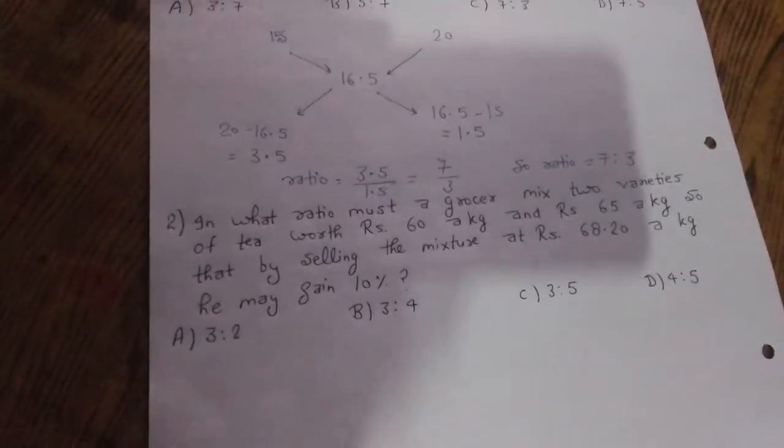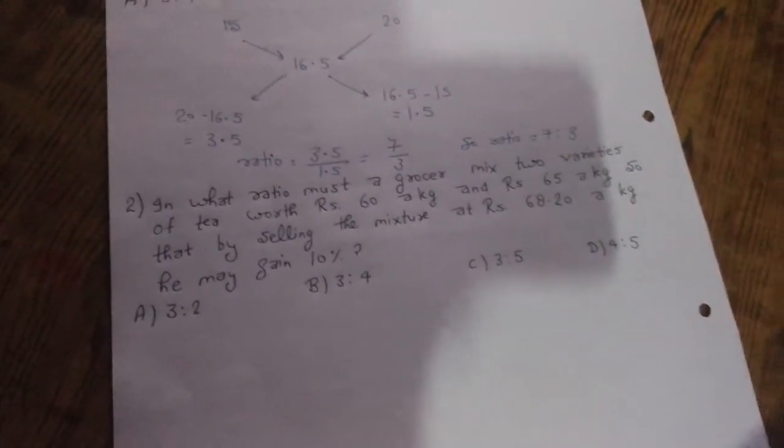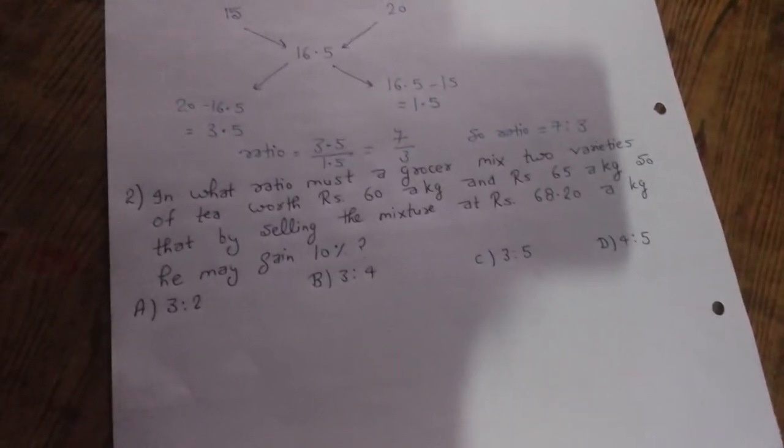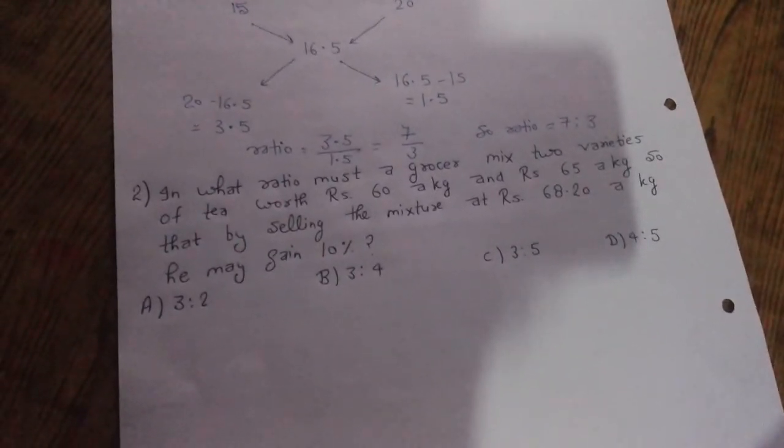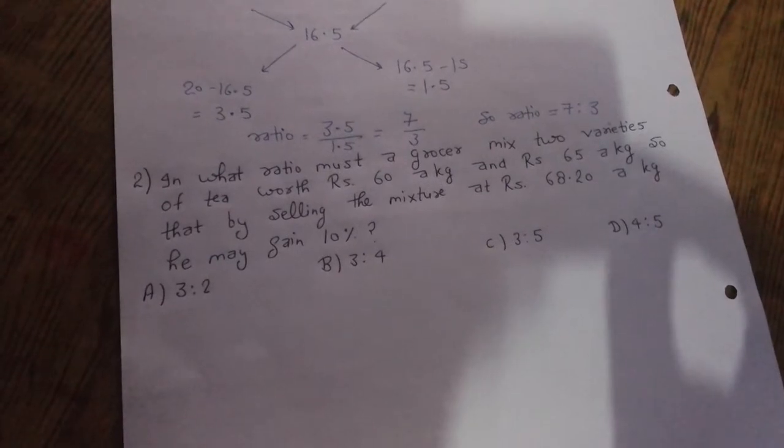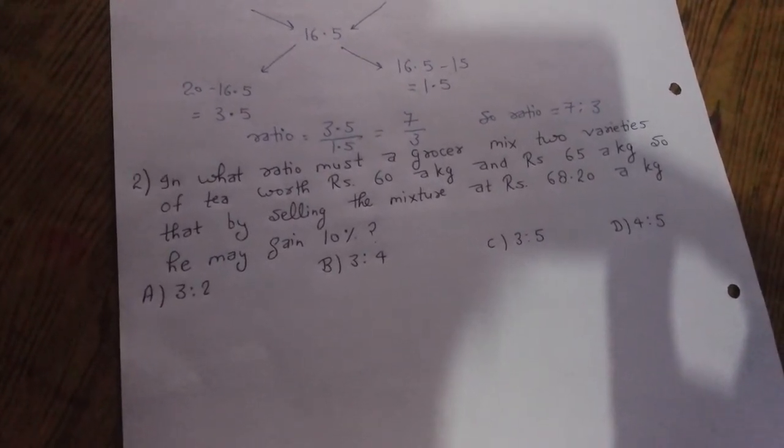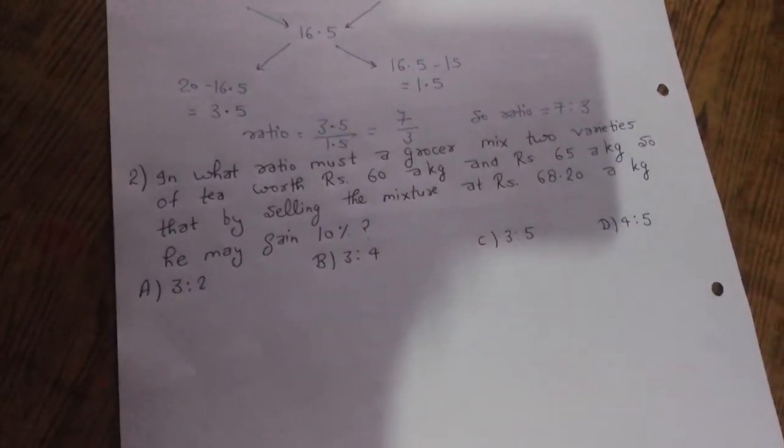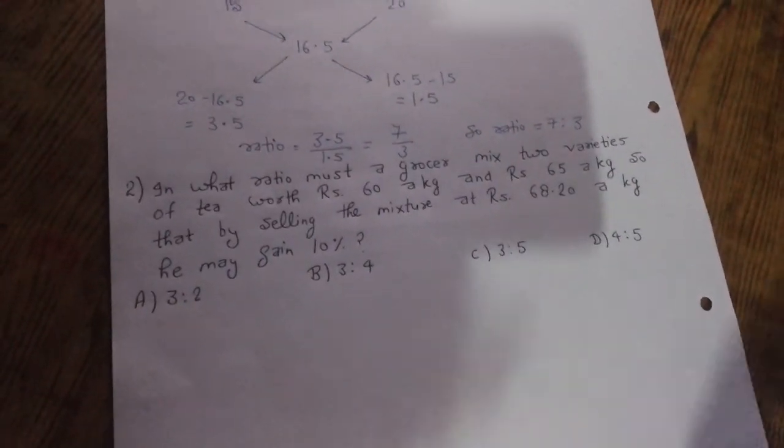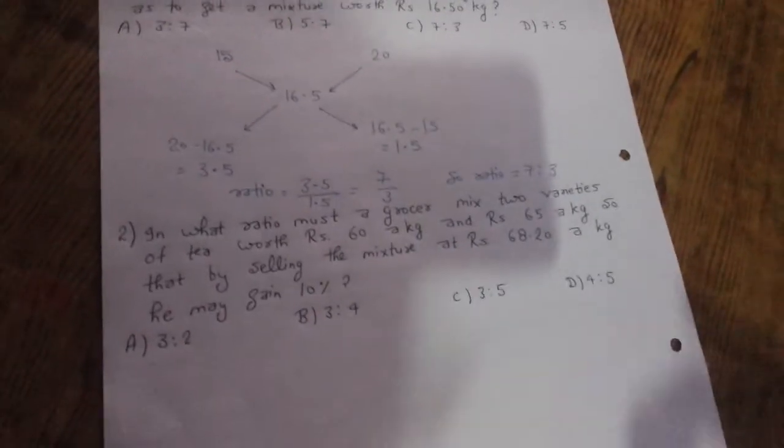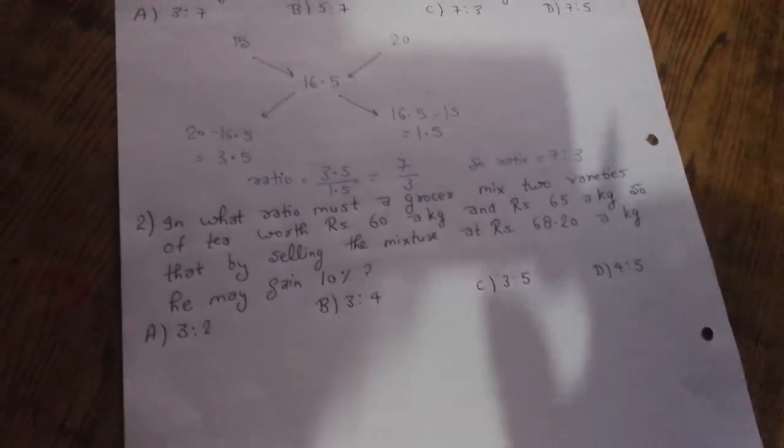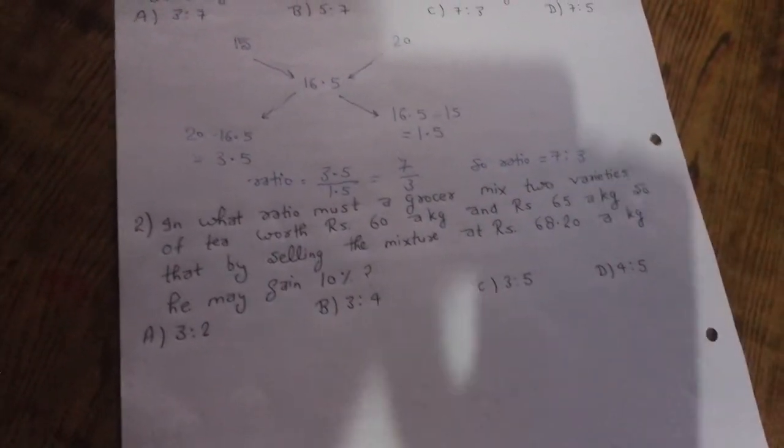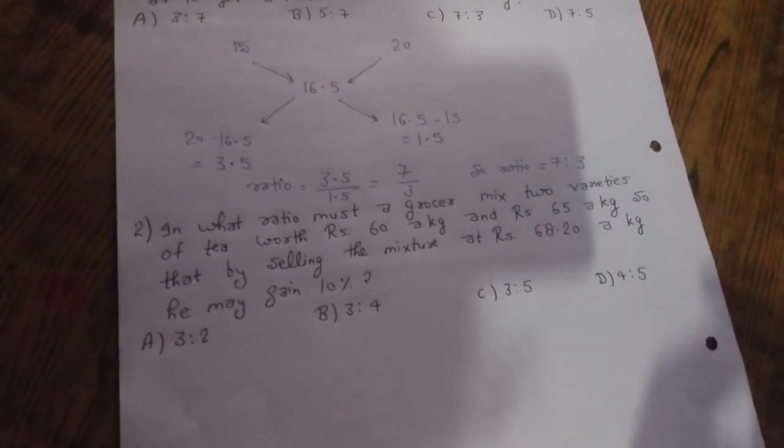Now let's take a second problem: in what ratio must a grocer mix two varieties of tea worth Rs 60 per kg and Rs 65 per kg, so that by selling the mixture at Rs 68.20 per kg he may gain 10%? In that there are two values, first given cost price, that is Rs 68.20 per kg.